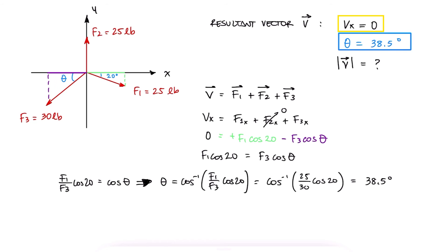Now since the x component is zero, the magnitude of the resultant vector will be its y component. The y component of v will be equal to the addition of the y component of the three forces.